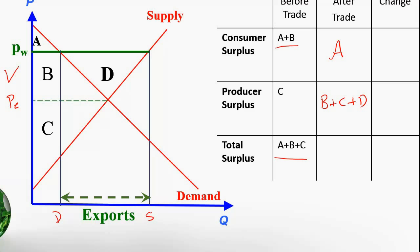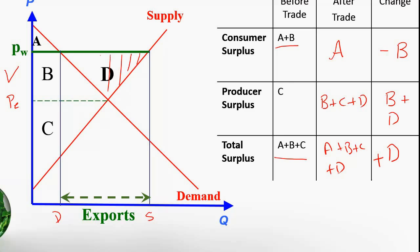So what is the change in consumer surplus? Consumers lose out the area B. Producers gain the area B, and they also gain an area called D. The change in total surplus is D, which is positive. So again, for this country that exports the good, there is gain from trade, and that's the area D. Thinking about this intuitively, as the price of this good increases when the country opens up to international trade, the producers get a higher value for their good so they gain, and consumers lose out because now they have to pay a higher price.